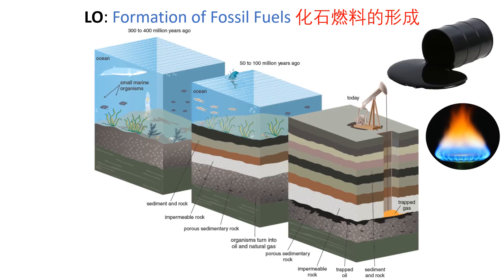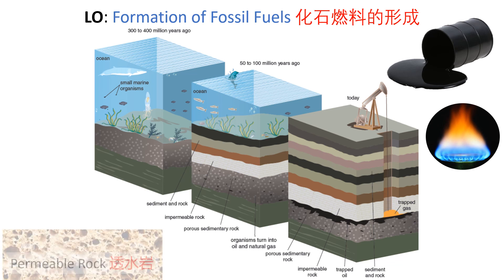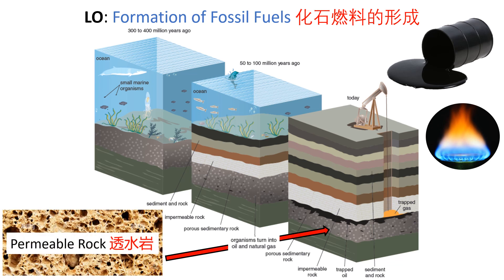Fossil fuels are extracted from the ground through mining. After studying Unit 1, you should all be experts in the process of mining. To mine for oil and gas, you need certain geological conditions to trap these fossil fuels, because oil is liquid and natural gas is a gas. These fossil fuels are usually trapped under a layer of impermeable rock, inside a permeable rock layer. A permeable rock is a rock with many pores, spaces, or holes, which allows liquids and gases to move within it. The conditions needed are shown in this diagram.